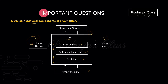The next component of the computer is primary memory, which is used to hold instructions and data during processing, but it holds them temporarily. The last unit is secondary storage, which is also used for storing data and instructions but holds them permanently. So that was the explanation for this question.